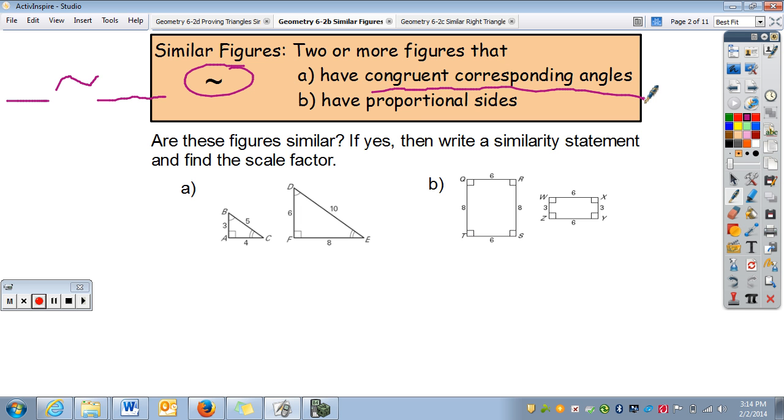If any of them are different, then they are not similar. They also have to have proportional sides, which means they have the same ratio. Again, you have to be consistent. Let's look down below.